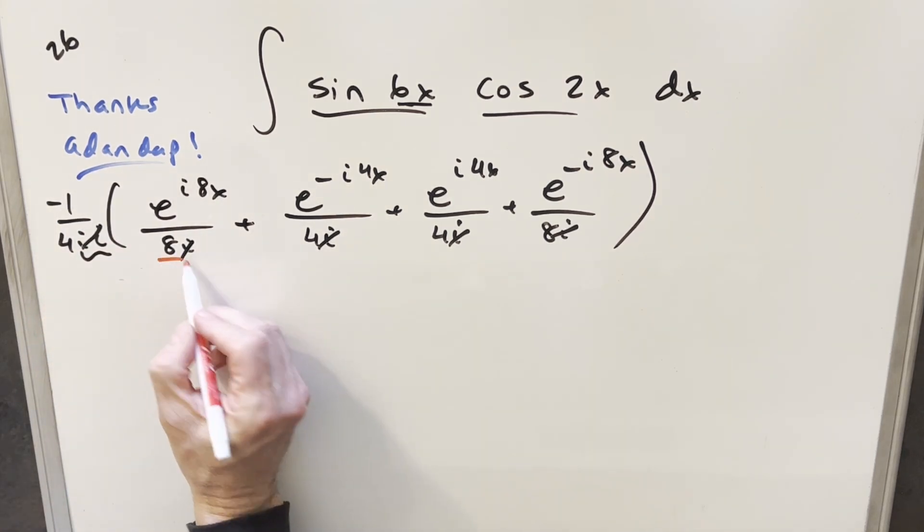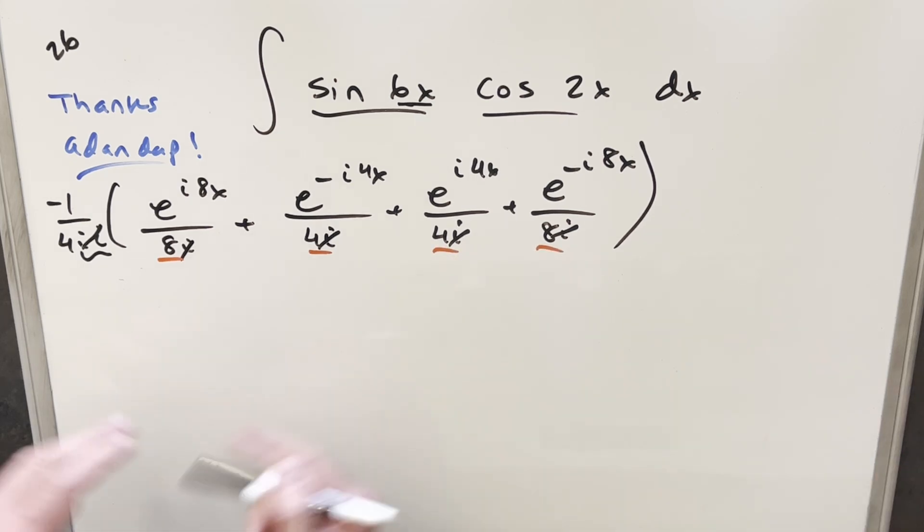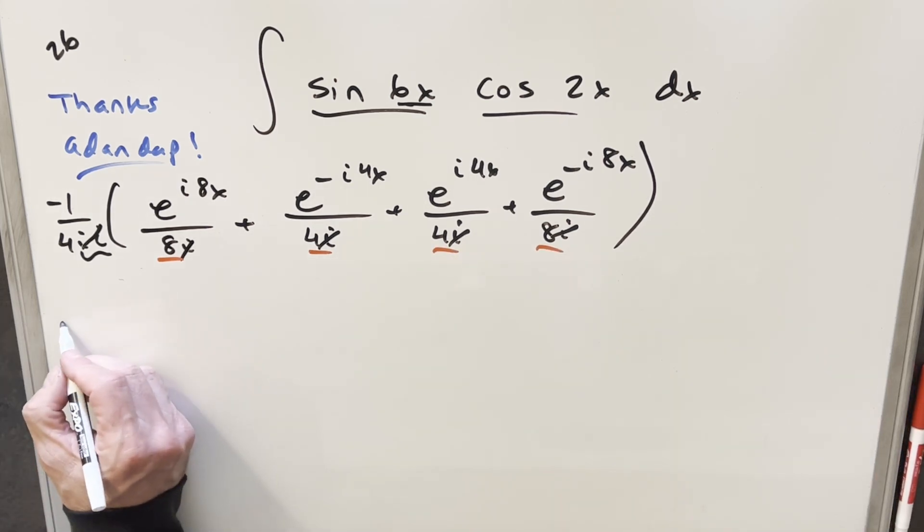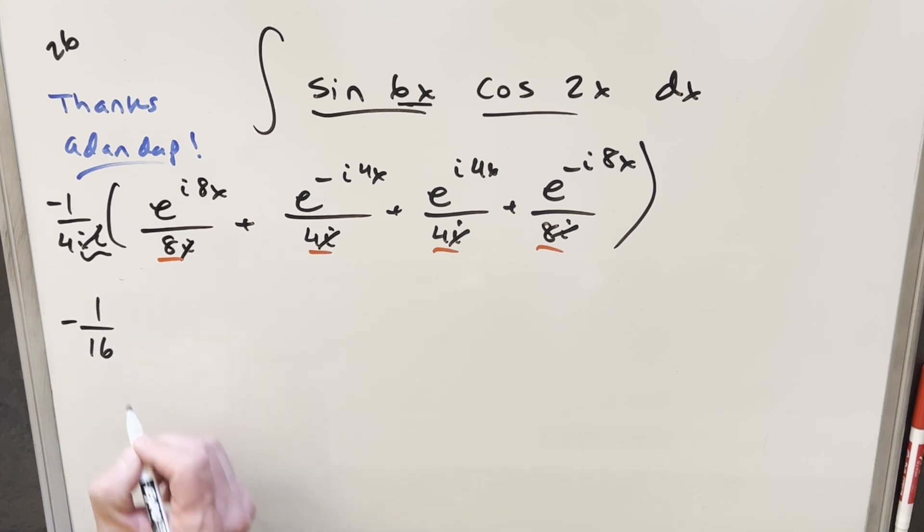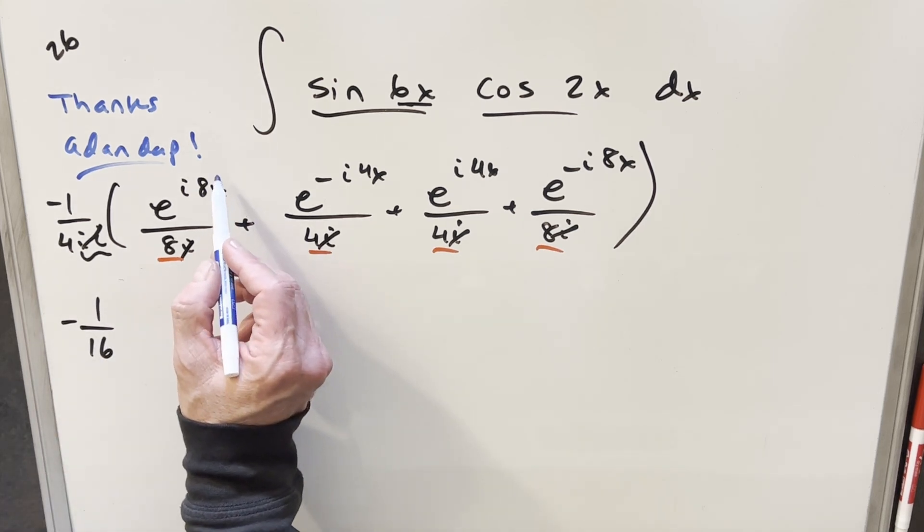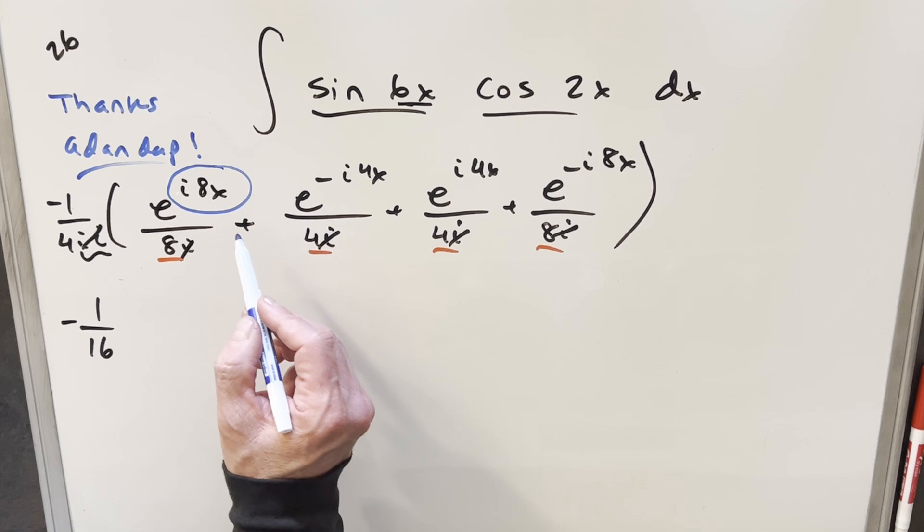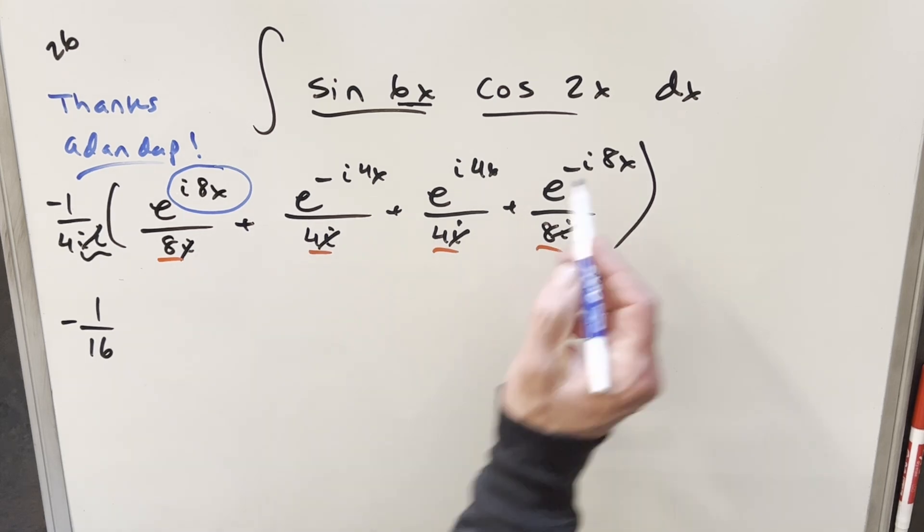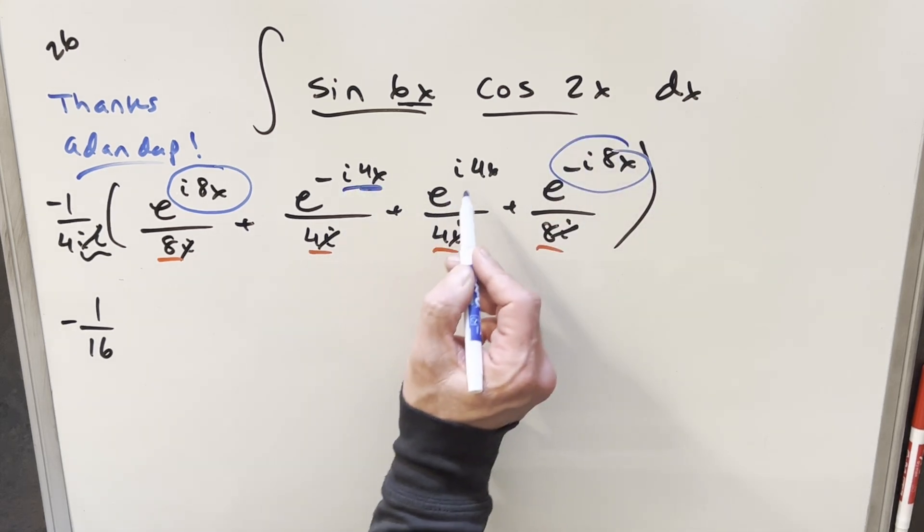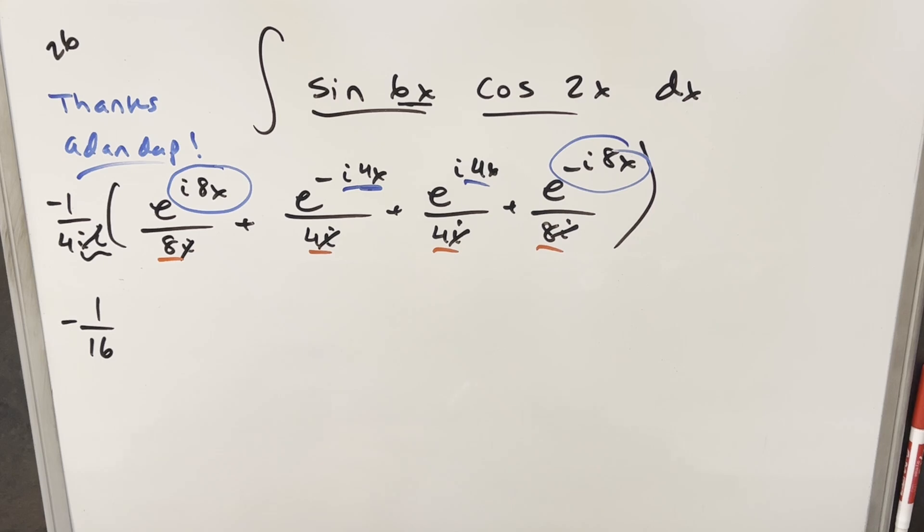And then because we've got 8, 4, 4, and 8. I think what I'll do is factor a 4 out in the denominator. So when I rewrite this, we'll have this as minus 1 over 16 in front. And then I want to kind of group the common exponent. So I want to bring, I want to group e^(i8x). I want to group this one with this one and then group this one with this one. So we'll just rearrange it a little bit.